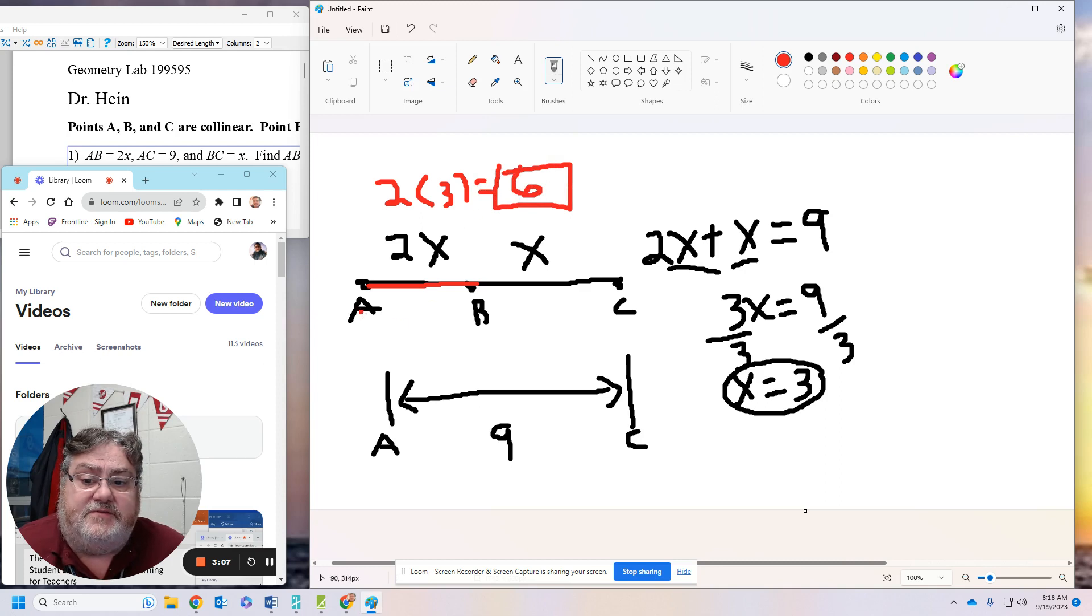Therefore, the length from A to B is 6. Thank you for joining me in the math bunker.